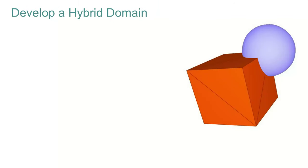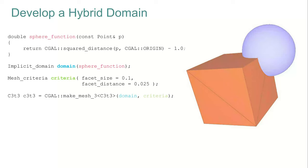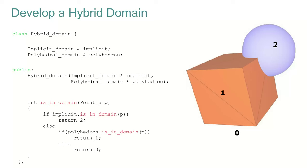To illustrate this, let's develop a hybrid domain consisting of the union of a polyhedral domain and an implicit function. Here is the pseudo code for meshing an implicit function, similar to what we saw earlier. For the hybrid domain, the is-in-domain function first checks if the point is in the sphere by forwarding to the implicit function domain, and if not, checks the polyhedral domain. Different indices are used so we have different subdomains. Since the sphere is checked first, its surface will be fully meshed and there will be an interface between the sphere and the cube. A third subdomain could be added for points that are both in the sphere and the cube, in which case the whole cube would also be meshed.